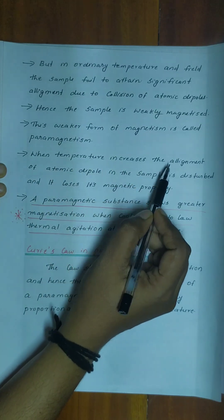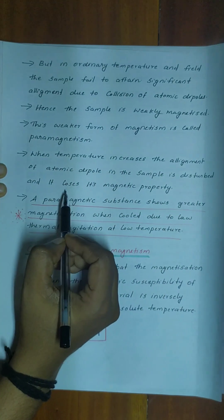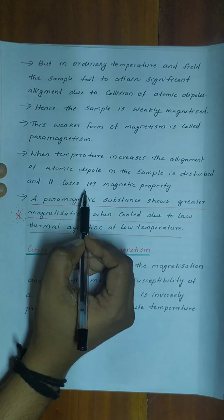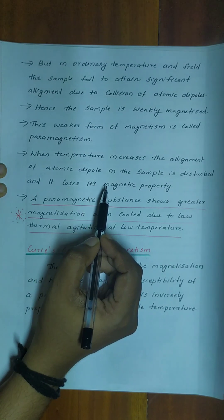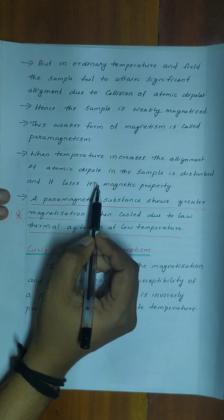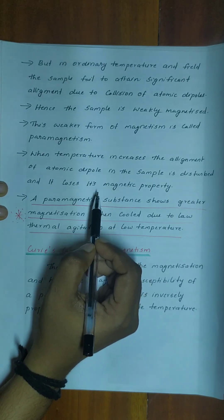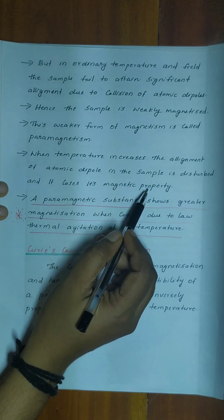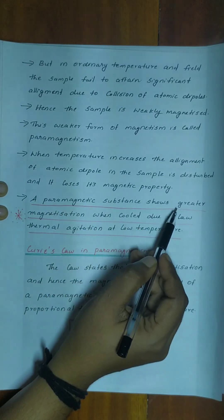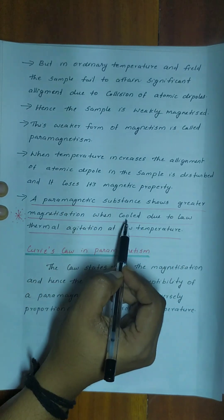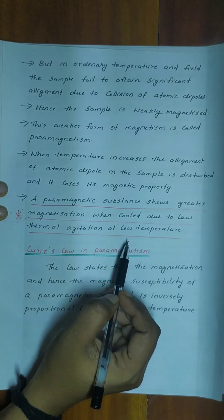When temperature increases, the alignment of atomic dipoles in the sample is disturbed and the material loses its magnetic property. A paramagnetic substance shows greater magnetization when cooled, due to low thermal agitation at low temperature.